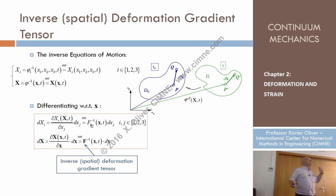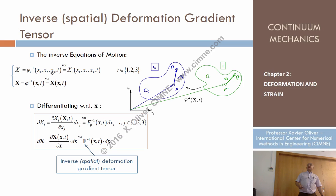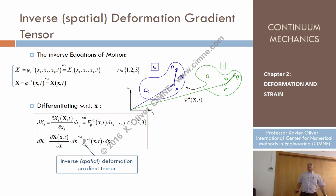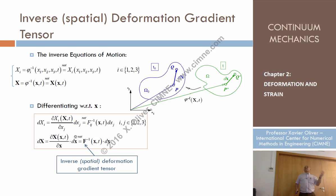This can be expressed in terms of a tensor that is not the same as before. Previously it was derivative of small x with respect to capital X; here it is derivative of capital X with respect to small x. I denote this with a minus 1 superscript, anticipating that this tensor will be the inverse of the previous one — though I haven't proved it yet. This gives an equation where, knowing the inverse deformation gradient tensor, I can compute the initial relative position from the current one.